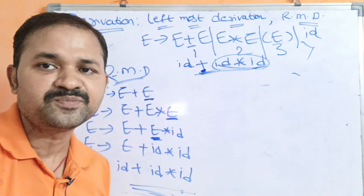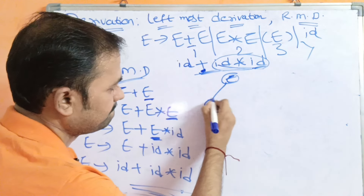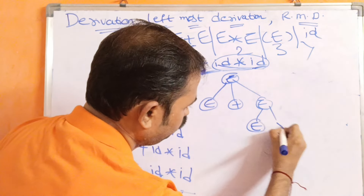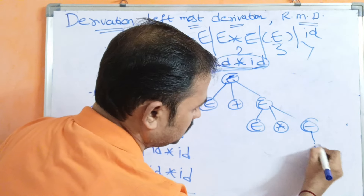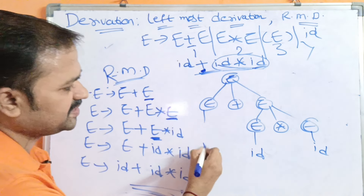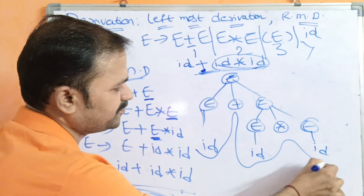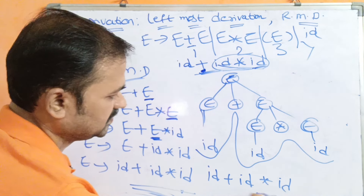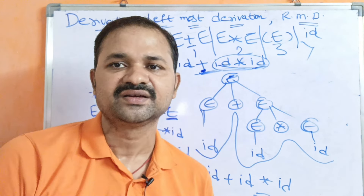Now we construct the rightmost derivation parse tree. E produces E plus E at the root. The right E expands to E star E. Then the rightmost E of that subtree gives id, and the next E also gives id. Finally the leftmost E under the root gives id. Reading terminals from left to right gives id plus id star id. This is the rightmost derivation tree.